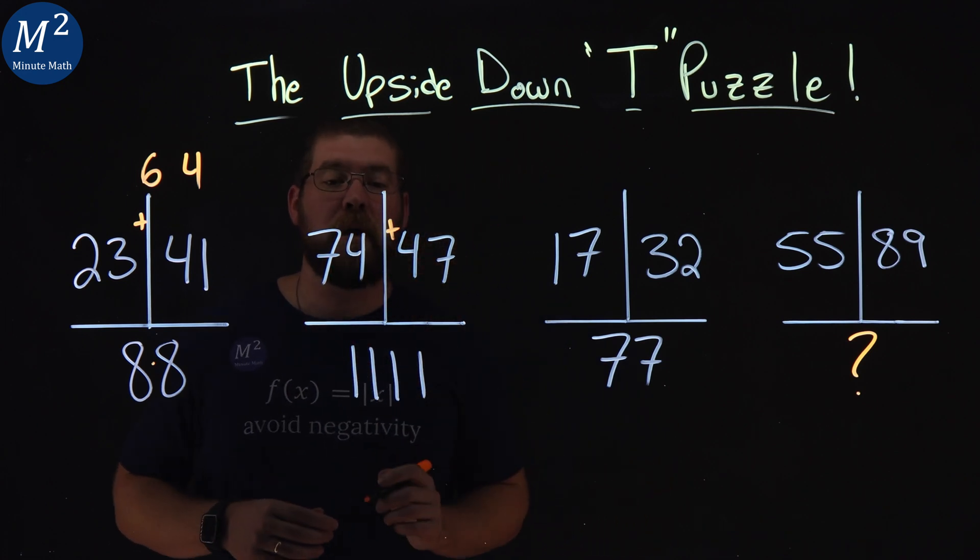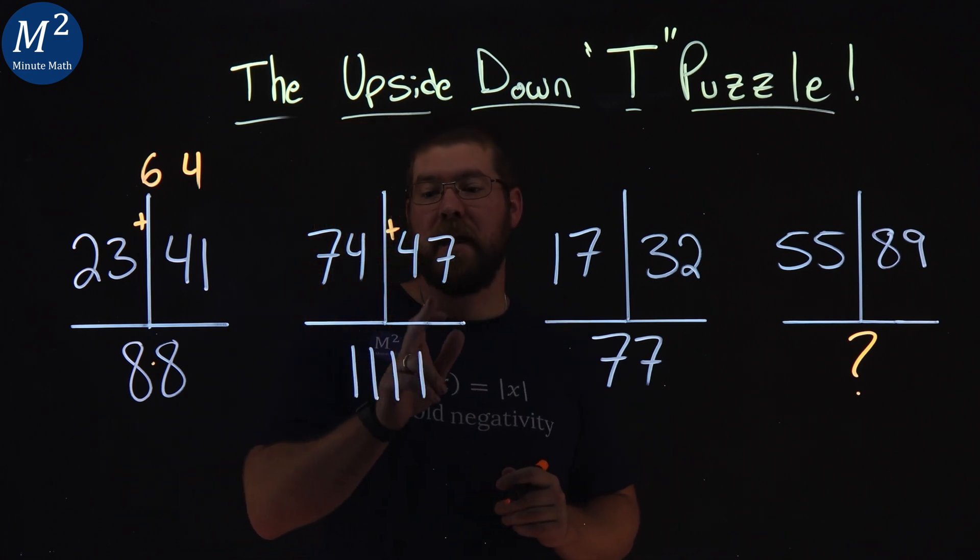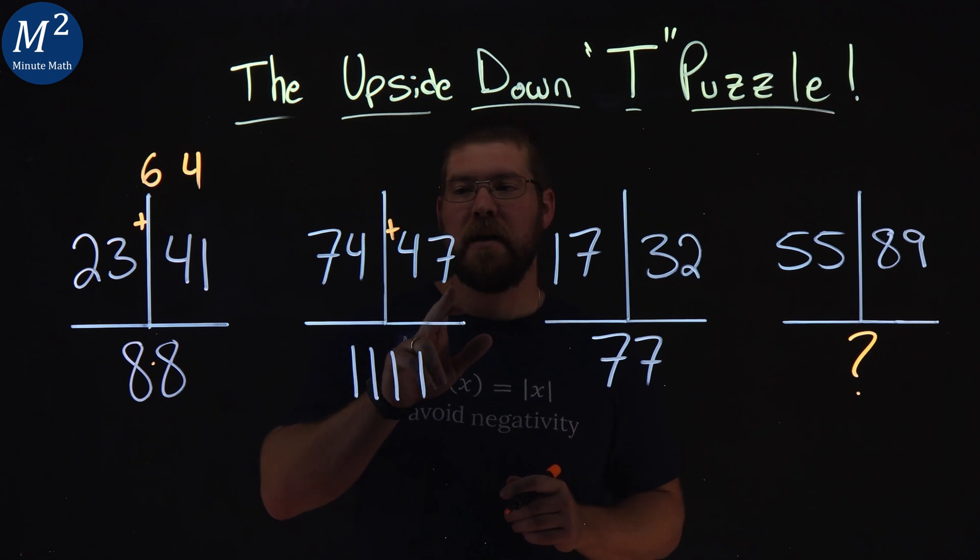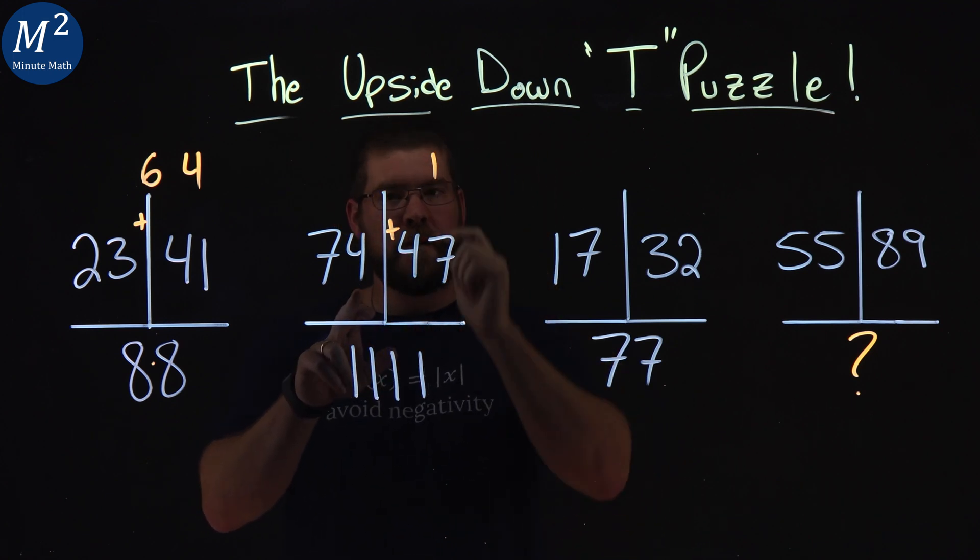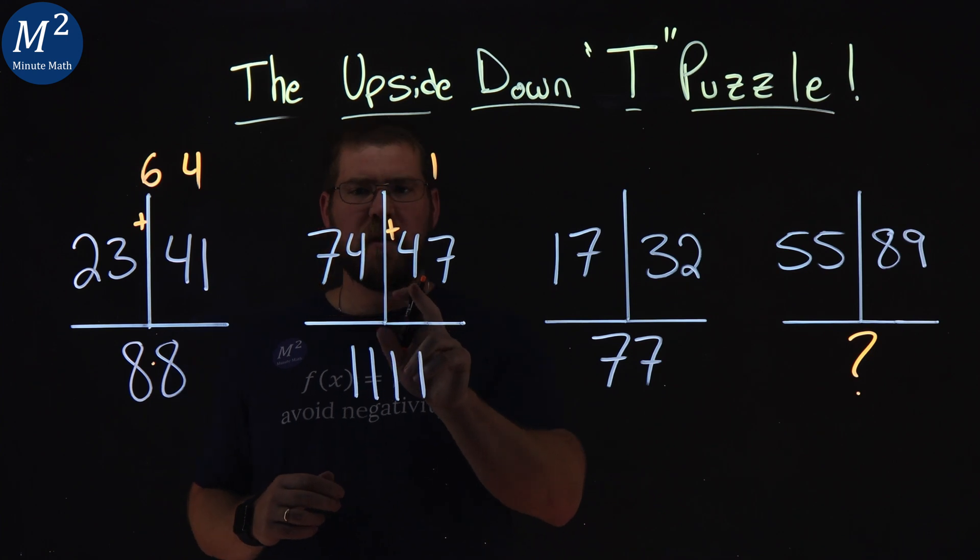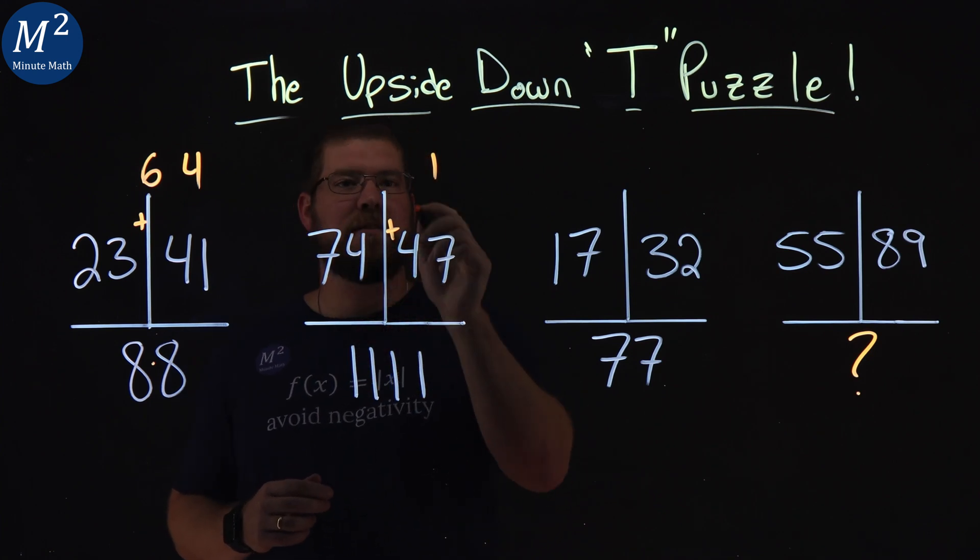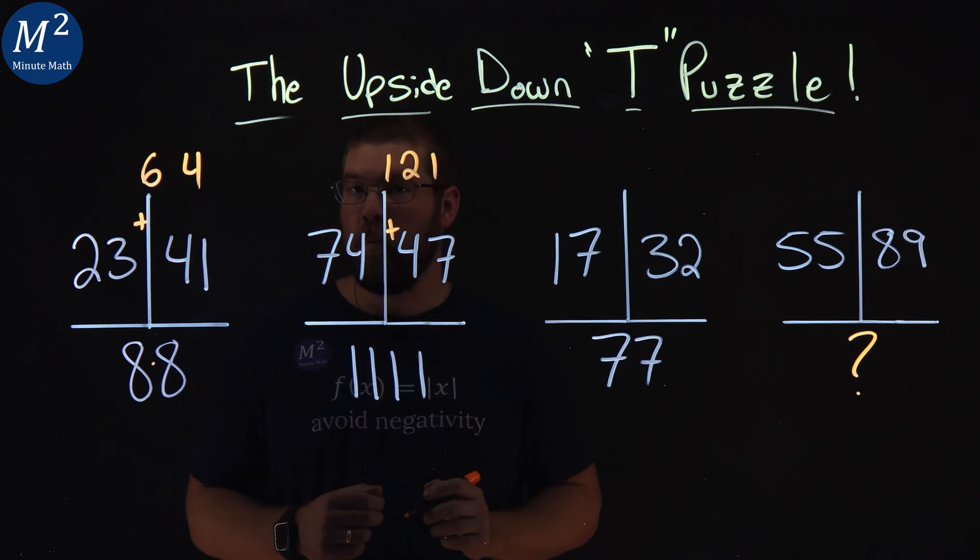Let's add these two numbers right here. 74 and 47. 7 and 4 make 11, carry the 1 to the next digit over. 4 and 7 makes 11, carry the other 1 as a 12. We have 121.